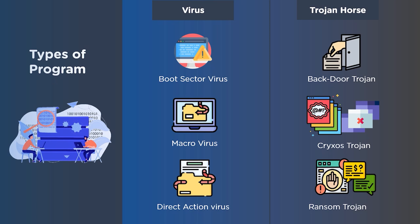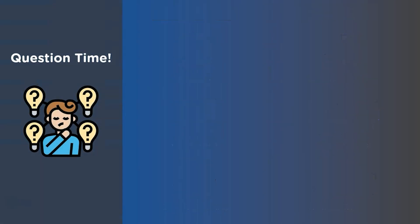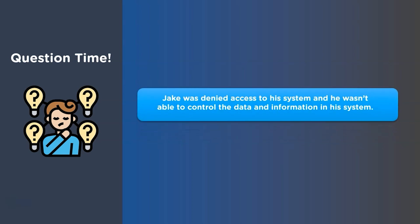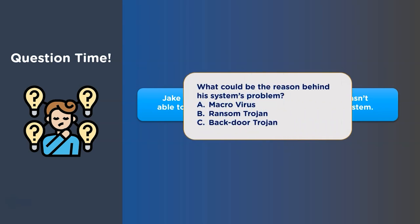Now that we understand viruses and trojans, let's solve a question. Jake was denied access to his system and wasn't able to control the data and information in his system. What could be the reason behind his system's problem? Option A: Macro virus. Option B: Ransom trojan. Option C: Backdoor trojan. Give your answers in the comment section.